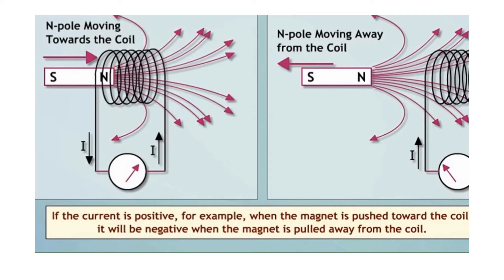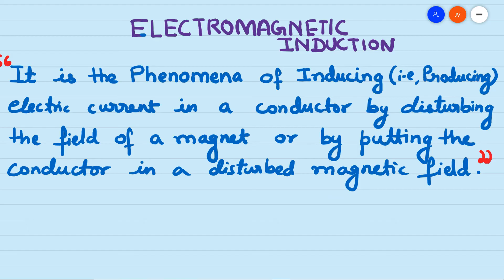The generation of induced current in the coil can be identified by the either side's deflection of the galvanometer. This phenomenon is called electromagnetic induction — that means electric current is induced by a magnetic field. Electromagnetic induction was proposed by Michael Faraday in the year 1831. It is a phenomenon of inducing electric current in a conductor by disturbing the field of a magnet, or by putting the conductor in a disturbed magnetic field.